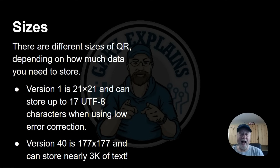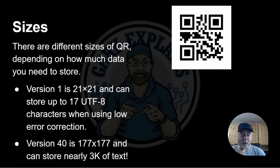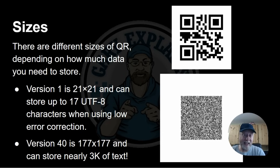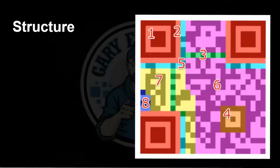There are different sizes of QR code. Version 1 is just 21 by 21 dots and can store up to 17 characters of UTF-8 encoded text using low error correction. You can go all the way up to Version 40, which is 177 by 177 dots and can store nearly 3KB of UTF-8 text. Generally we tend to use much lower versions — Version 2, 3, or 4 — depending on how much information we want to squeeze in.